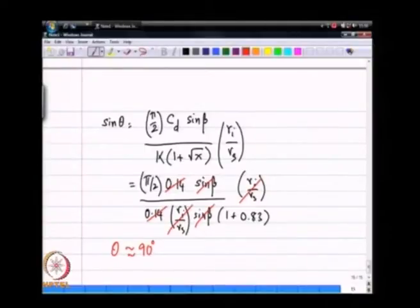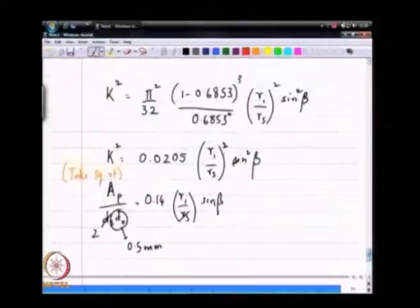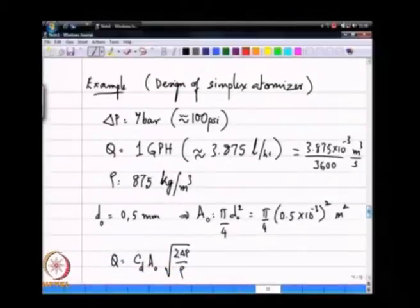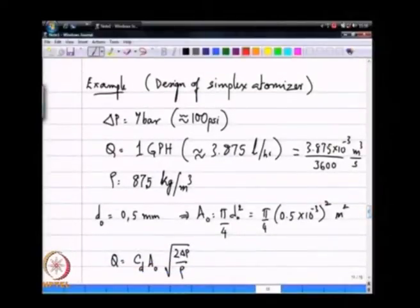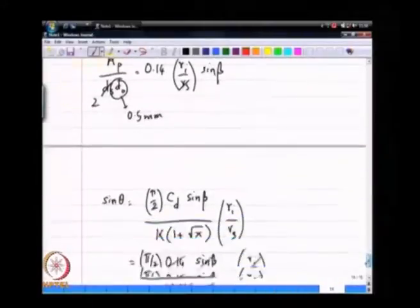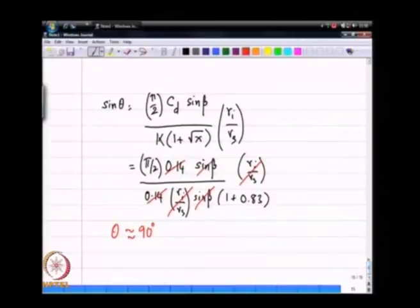I prefer using the expression for tan theta because that allows you to without loss of ambiguity find theta that goes beyond 90 degrees. This is how we started with a certain set of inputs in the form of the pressure, the source pressure Q, the volume flow rate, density.